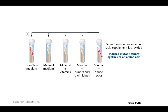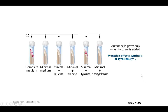They concluded that their mutant could not synthesize a particular amino acid. Then they wanted to know which one. Taking complete medium as a positive control and minimal medium as a negative control, they added back individual amino acids. When they added back tyrosine, the mutant was able to grow. So they concluded that whatever mutation they had induced affected the synthesis of tyrosine — making them tyrosine-minus, or tyrosine mutants.